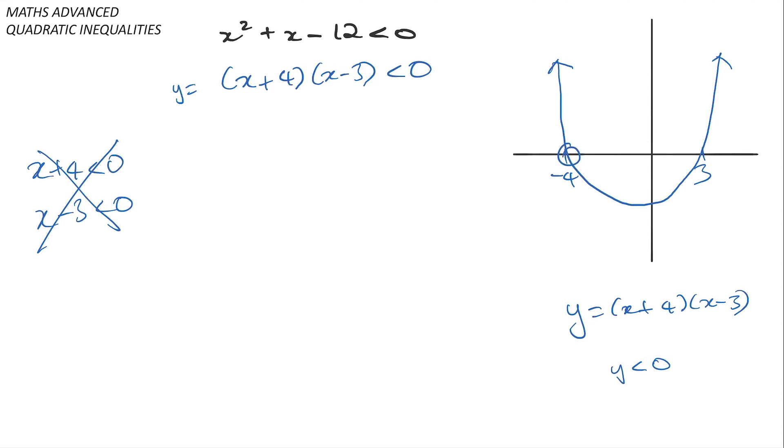and because it's a strict inequality I'm not going to include the boundaries minus four and three but that will basically be this whole portion here and the corresponding x values as you can hopefully see will be the x values between minus four and three